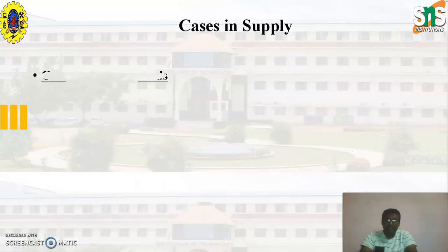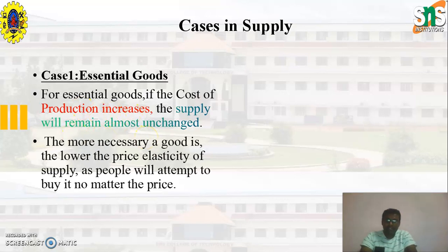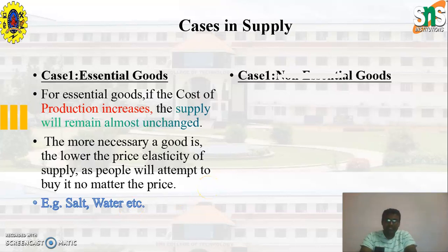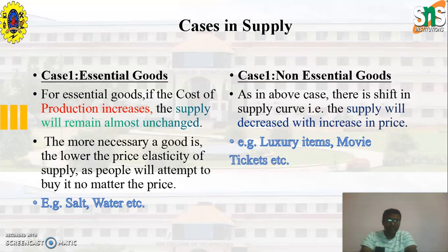In case of supply for essential goods, if the cost of production increases, the supply will remain almost unchanged. Examples of essential goods include salt, water, etc. Whereas in case of non-essential goods, there is a shift in the supply curve — the supply curve will decrease with an increase in price. Examples include luxury items, movie tickets, etc.